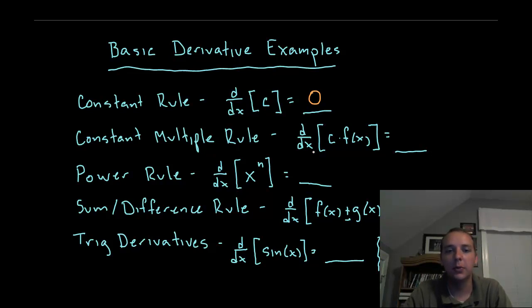The constant multiple rule said that if you have any constant times a generic function like 5 sine x or 2 x squared or something like that, then the constant can just stay. I like to call it a tag-along constant and you just differentiate the function. So this would be c times f prime of x.